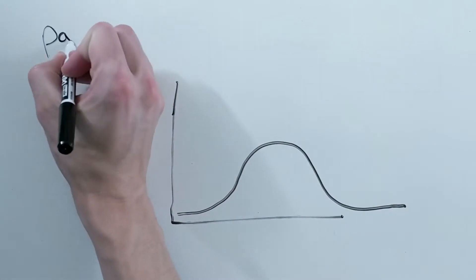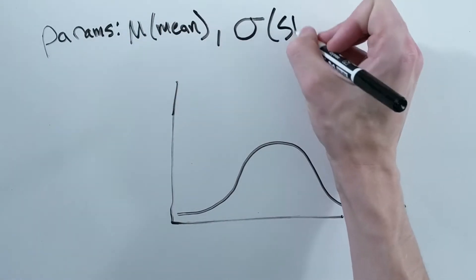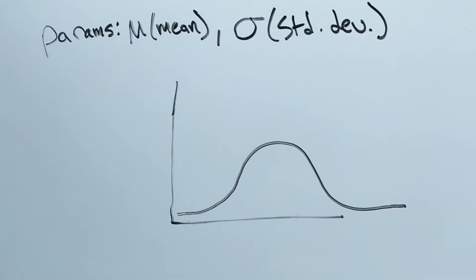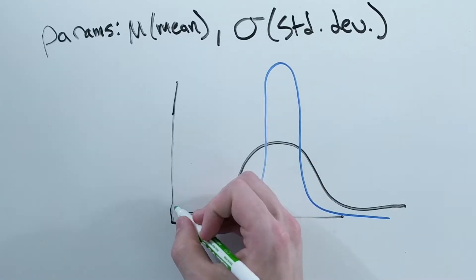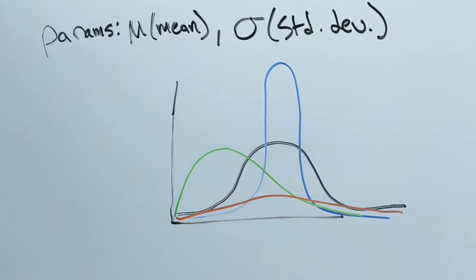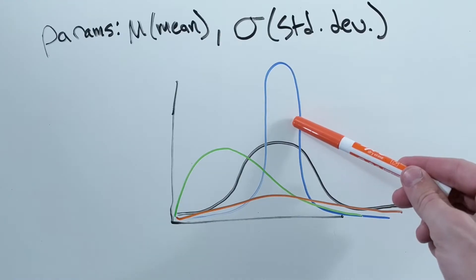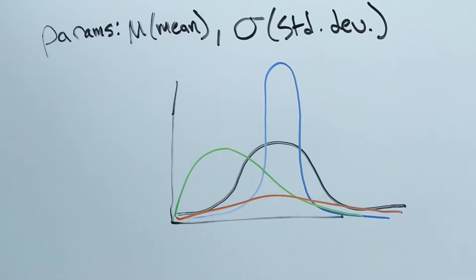For instance, if we are trying to fit a Gaussian distribution to a set of data we need to find the parameters mu and sigma, the mean and standard deviation. Then using maximum likelihood estimation we can determine which parameters or which curve was most likely to have created the data points we observed.